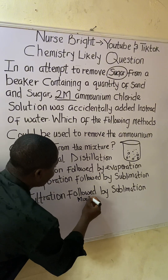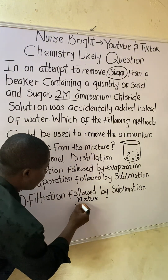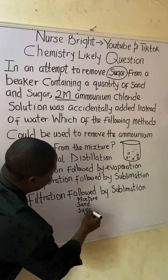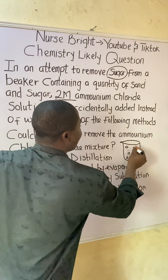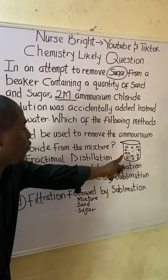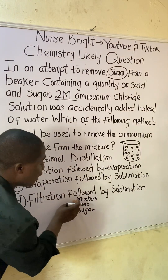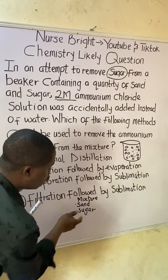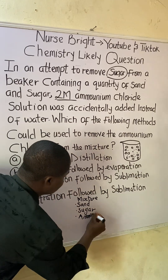Here is the mixture. Initially the mixture contained sand and sugar, and now we also have the ammonium chloride that was added instead of water. So this mixture now contains three substances: sand, sugar, and ammonium chloride.